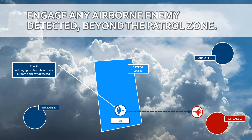As a summary, automatically when the AI is detecting targets, it will attack those targets beyond the parameters of the patrol zone. This is regardless of any distance — it could even be 30 kilometers. When the enemy is detected, it will attack it.